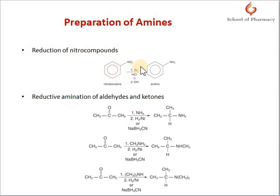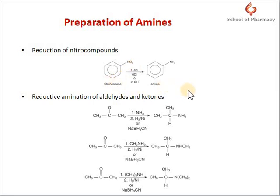For the reduction of aromatic nitro compounds, we use tin in hydrochloric acid — or stannous chloride — and that gives the aromatic primary amine, aniline. We can also use alcoholic ammonium sulfide or other reducing agents for aromatic primary amines. When reducing an aliphatic nitro compound, lithium aluminium hydride is used as the reducing agent, giving the aliphatic primary amine.